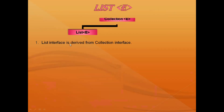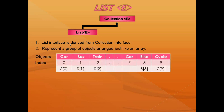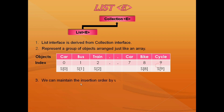A list interface is derived from collection interface. It represents a group of objects which is arranged just like an array. In list interface, insertion order of the objects must be preserved — in which order we added, in the same order the objects should be saved. Here we can see index 0, 1, 2 up to 9. The first object is placed at 0th index, second at 1st index, third at 2nd index, and so on. We can maintain the insertion order by using index.